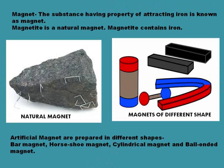Magnet: The substance having the property of attracting iron is known as a magnet. People have discovered that certain rocks have the property of attracting pieces of iron. They also found that small pieces of these rocks have some special properties. They named these naturally occurring materials as magnets, and one example of a natural magnet is magnetite.